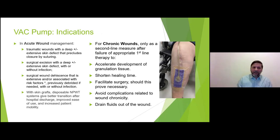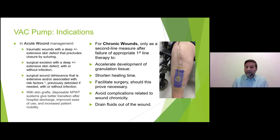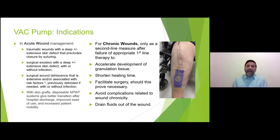When do we use NPWT? In acute conditions: traumatic wounds with deep extensive skin defects, after surgical excision when a large defect remains, skin dehiscence when you want to fill the gap without putting remaining skin under pressure, and when using skin grafts. In chronic wounds like ulcers, it speeds up development of granulation tissue and shortens healing time.